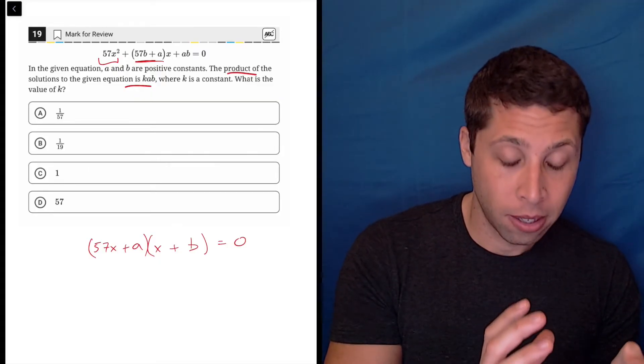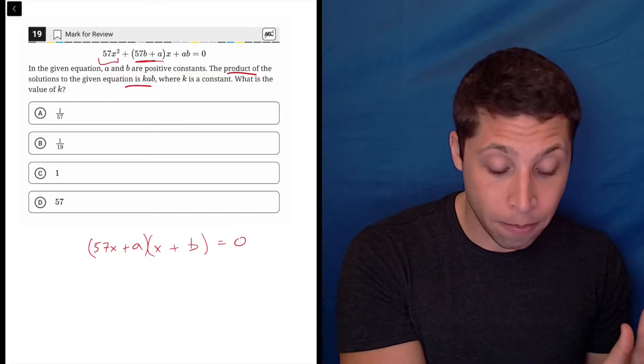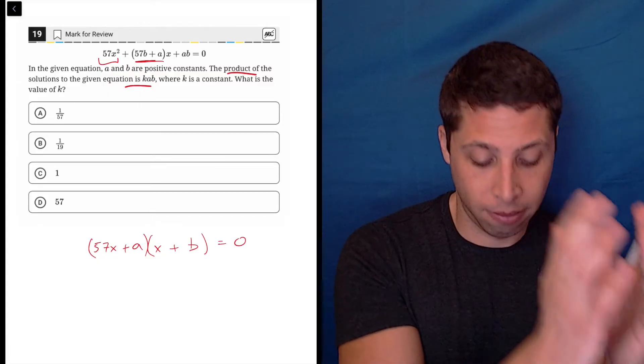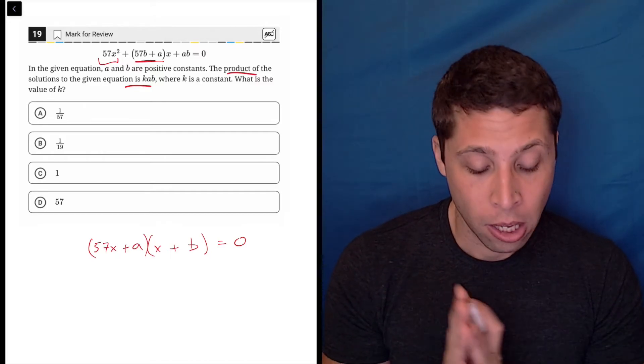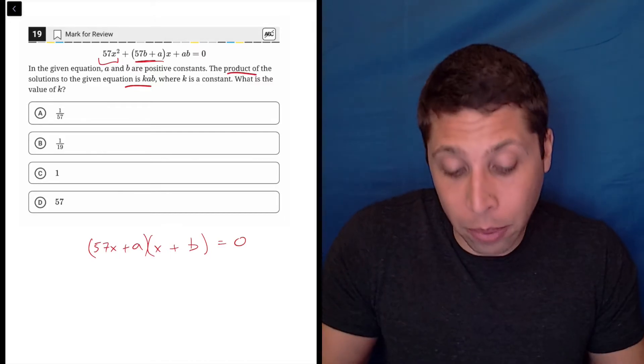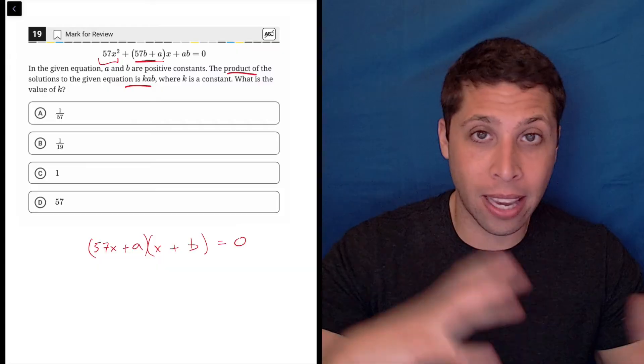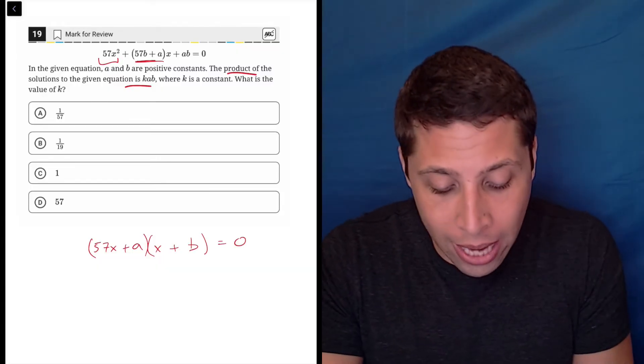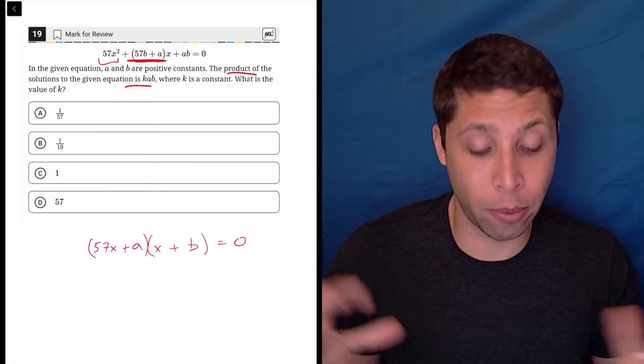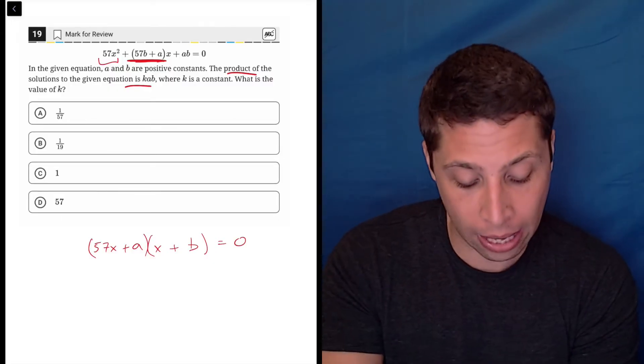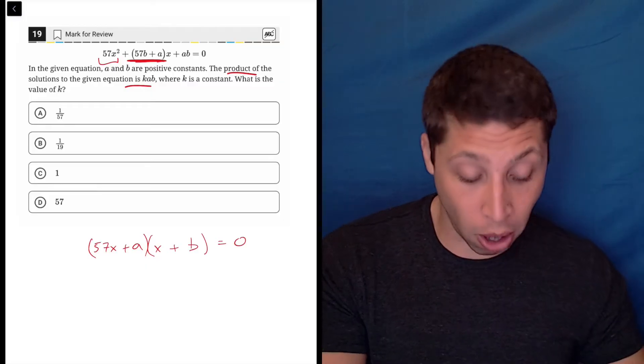You do 57x times x, you do 57x times b, you do 57x, or you do x times a, and then you do a times b. So that's how we would get this, and because the a's and the b's can't really be combined easily, we'd end up with a weird kind of middle term because we can't smush those numbers into one. We have to kind of keep it as this separate thing.